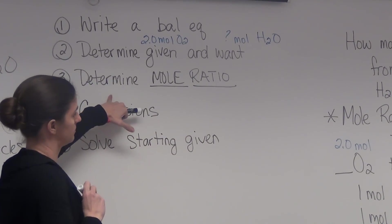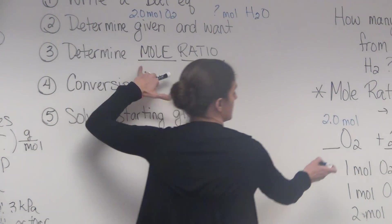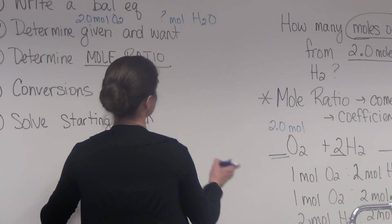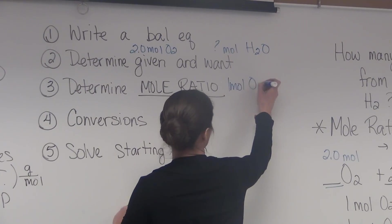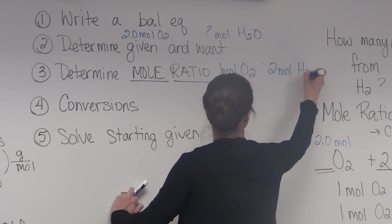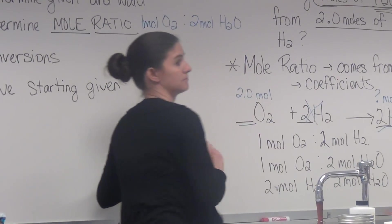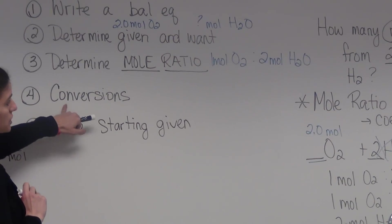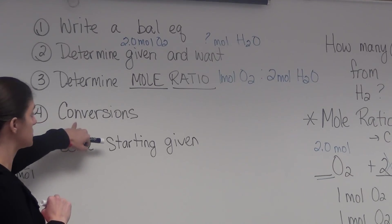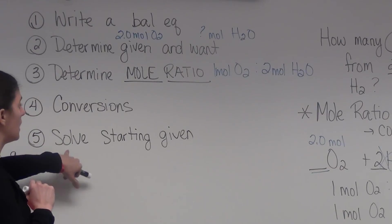Determine my mole ratio. In this case, remember mole ratio, the coefficients. So we have oxygen and we have water. So we're going to say 1 mole of O2 to 2 moles of H2O. You're only going to look at 2. So you don't need this. And then our conversions. Well, what are we going to need? We're going from moles to moles. So there's really no conversion besides the mole ratio.